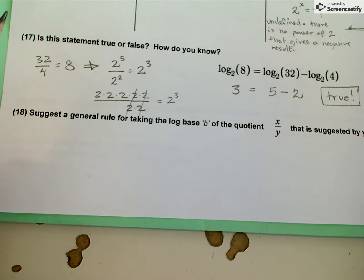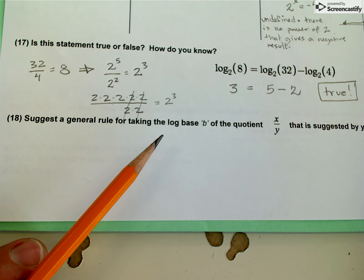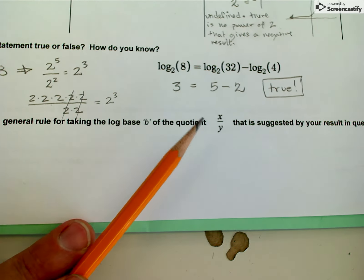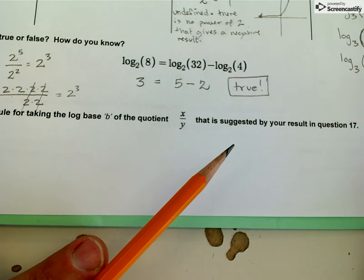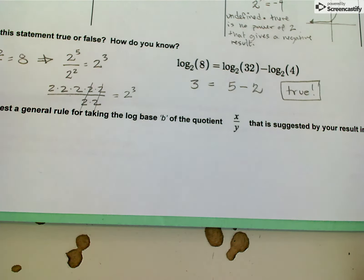So when it says here, suggest a general rule for taking the log base b of this quotient that's suggested by this result, here's what I mean.